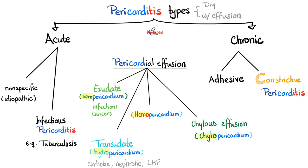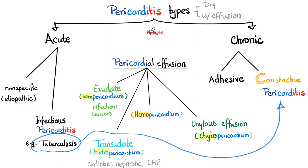We can also have chronic pericarditis, such as chronic adhesive pericarditis and chronic constrictive pericarditis, which is today's topic. The same tuberculosis that causes acute pericarditis can also lead to constrictive pericarditis. Post-radiation exposure and after cardiothoracic surgery are also causes of constrictive pericarditis.